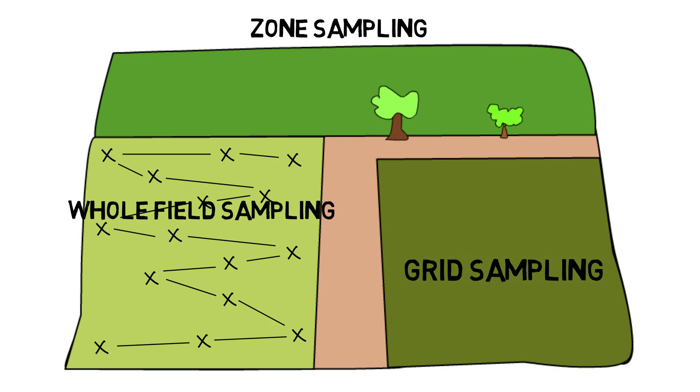Zone sampling is best when you know that there is some variability in a field, like where one side of a field might be different than another. This could be for several reasons. One could be that you know that there's a difference in soil series between one side of a field and another, or it could be differences in topography, or because one side of a field has ponding or water issues.